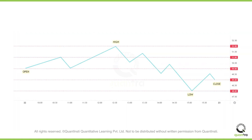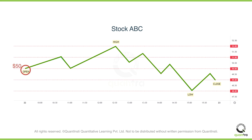For example, assume that for a particular day, the price of stock ABC moves in a manner as shown below. Based on the above, we can say that the start of the trading day seemed bullish for the asset. As we can see, the prices opened at $50 and moved up all the way to $52, which was the highest price for the day. However, in the second half, the sellers seem to have dominated, and the prices hit a low price of $48. And eventually, towards the end of the trading day, the prices recovered a bit and closed at $49.